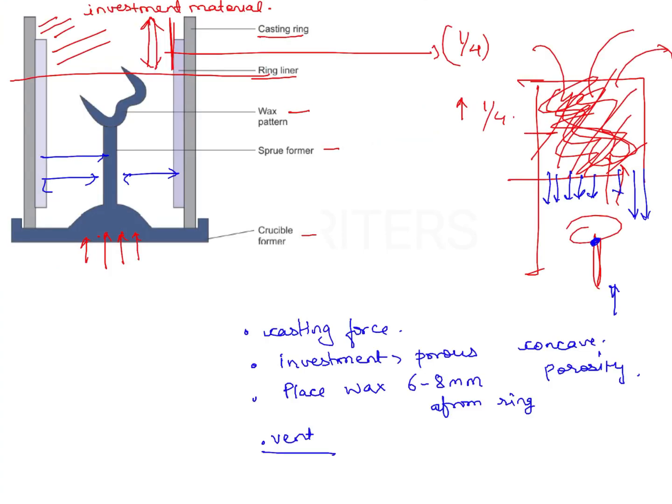The second option is subsurface porosity. The exact mechanism of subsurface porosity is not really understood, but it occurs because of solid grain formation. We have molten metal flowing in of which some parts are getting solidified, so there are these grains which are formed within the molten metal.